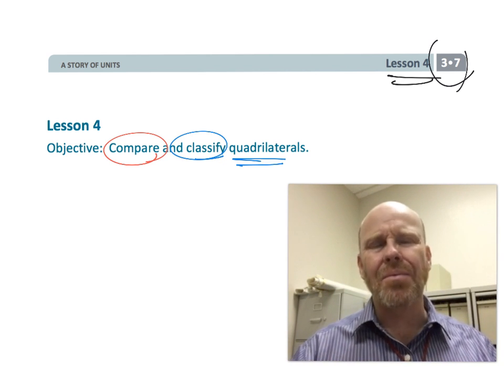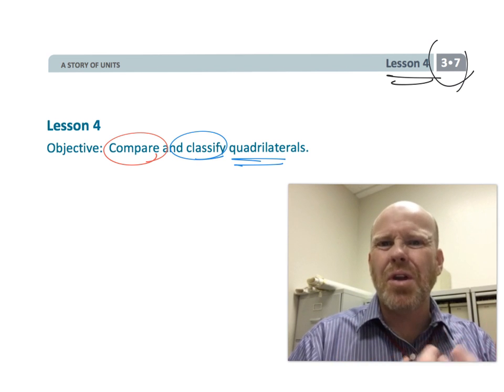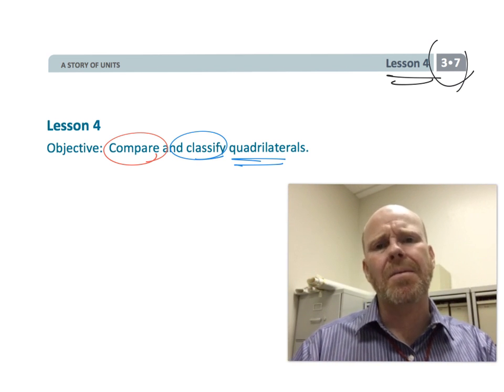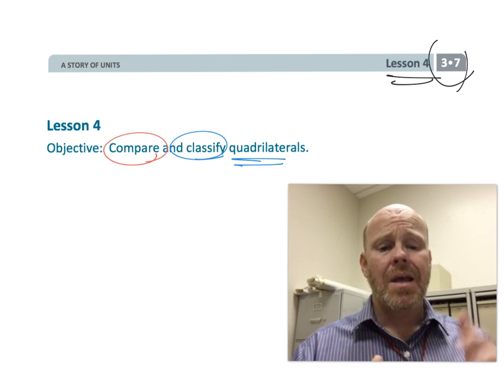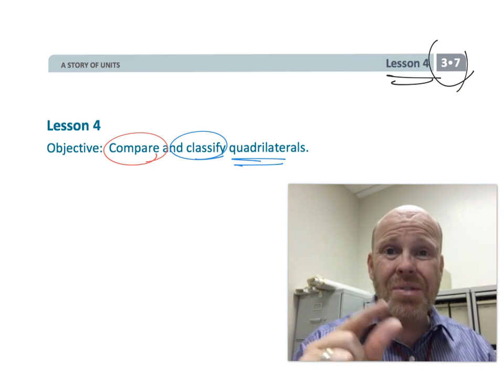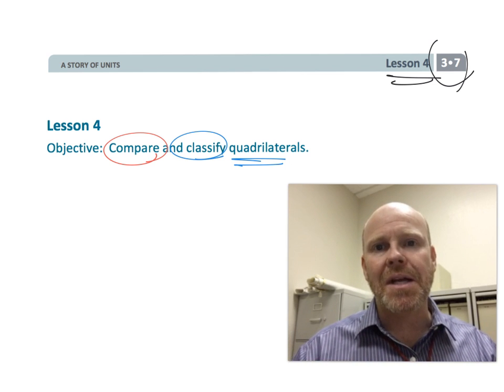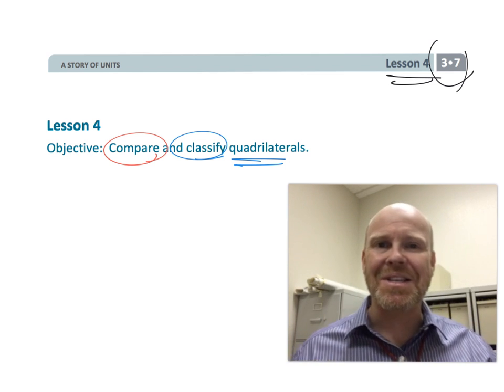At this point a lot of the stuff that we're going to be doing, we're referring back to second grade. We're going to be talking about things like parallel, 90 degrees, we're going to be talking about angles and points and vertices. So a lot of this is vocabulary from second grade at this point. So let's get started.